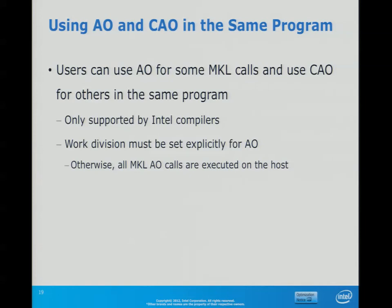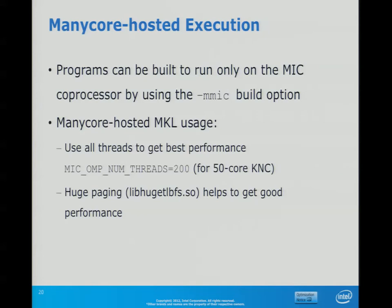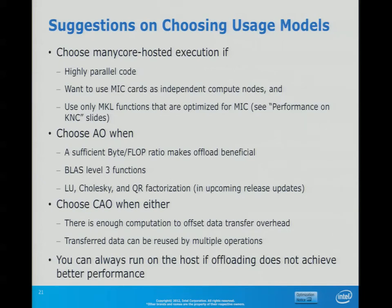Automatic Offload and Compiler Assisted Offload work together — you can mix them within the same program without interference. For Many Core Hosted execution, this is suitable for an initial port. If you have a large application, you can link against MKL the same way as on the regular Xeon side — just adjust the linker path to where the MIC-compiled libraries are found. You'll see this in the makefiles and examples. These are just hints on choosing one model over another.